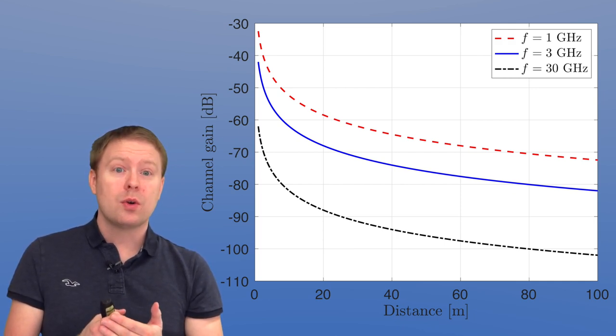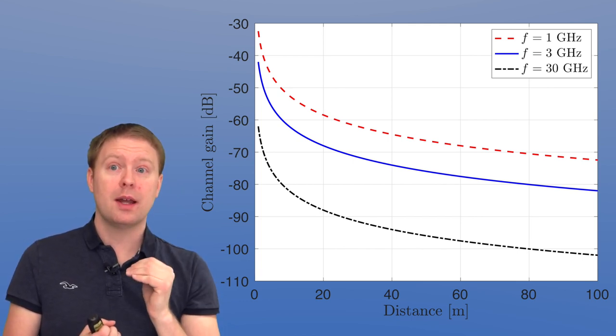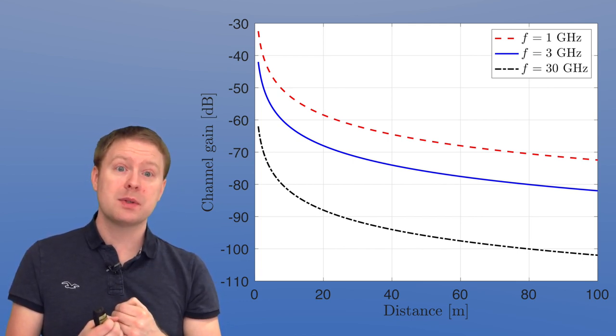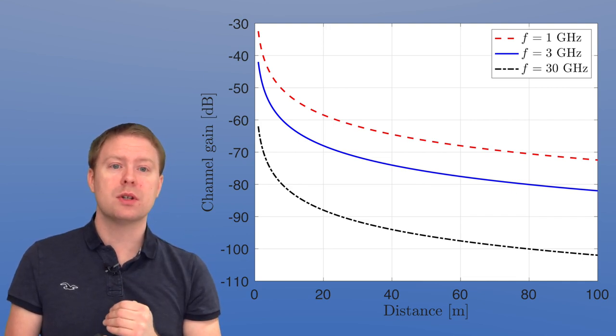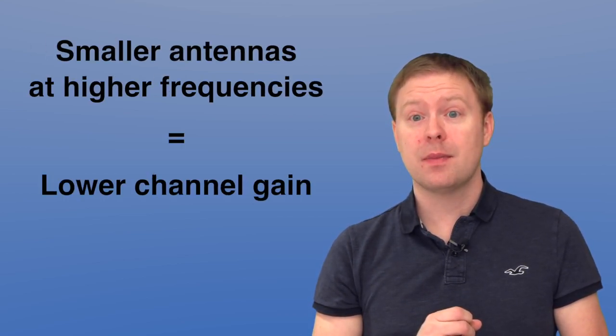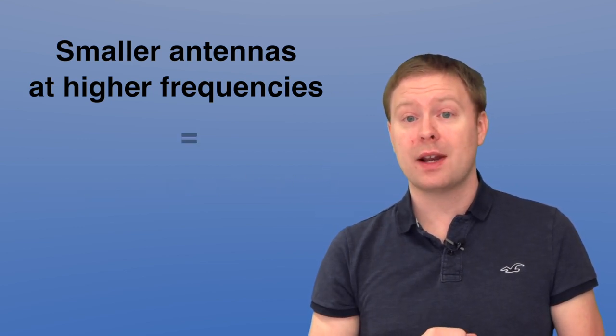If you are going to a lower frequency like 1 gigahertz the curve is going up. If you are going to a higher frequency like 30 gigahertz the curve is going down so you are losing more in channel gain. That doesn't really mean that the propagation is any way different. It's just the fact that the smaller the wavelength is at higher frequencies, you get the smaller and smaller size of an isotropic antenna.